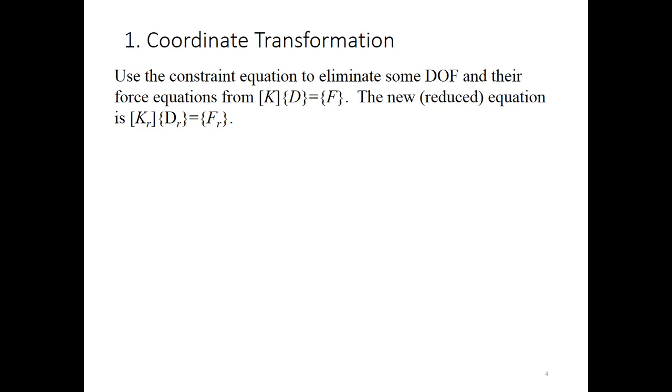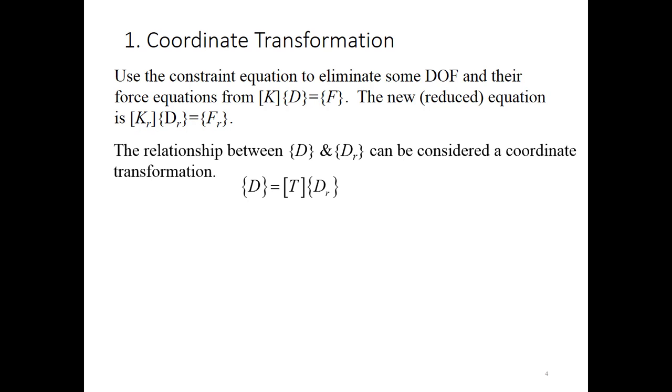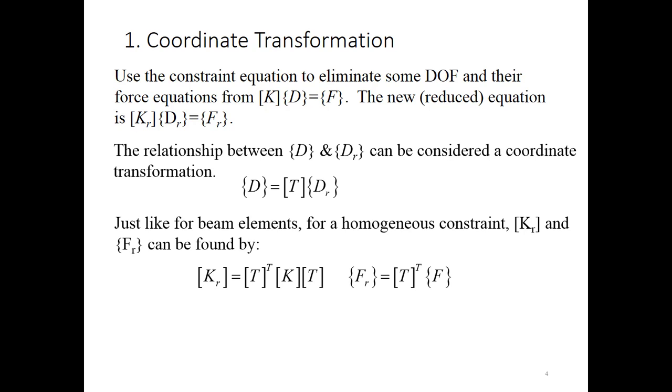First off, let's look at the coordinate transformation. What we want to do is use the constraint equations to eliminate some of the degrees of freedom and their corresponding equations from KD equals F. Then we'll end up with a new reduced set of equations, which is KRDR equals FR. The relationship between the full degree of freedom vector and the reduced degree of freedom vector is a coordinate transformation. And we're going to write that as the full degree of freedom vector is equal to the transformation matrix T times the reduced degree of freedom vector. Just like for beam elements and truss elements where we have transformation matrices, for homogeneous constraint, KR and FR can come from these relationships here. So KR is equal to the transformation matrix T transpose times the original K times the transformation matrix again. And FR is equal to the transformation matrix transpose times F. Again, the transformation matrix acts like a rotation matrix. That's why we can use the transpose here.